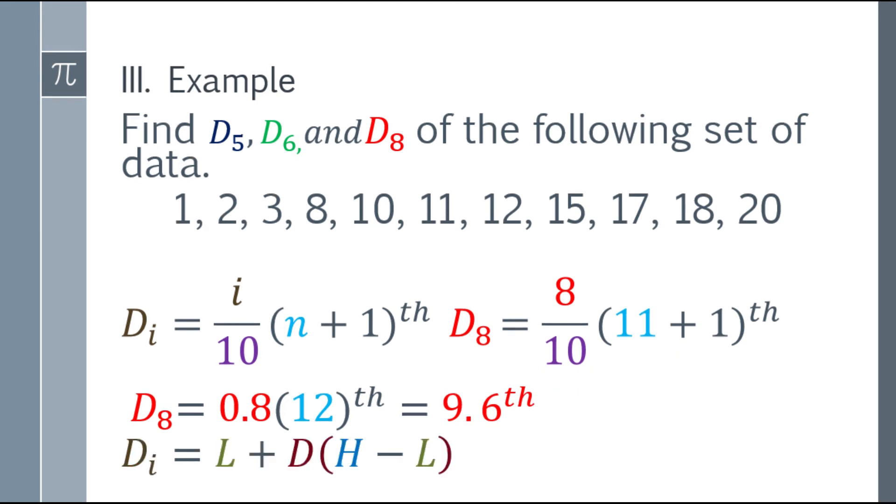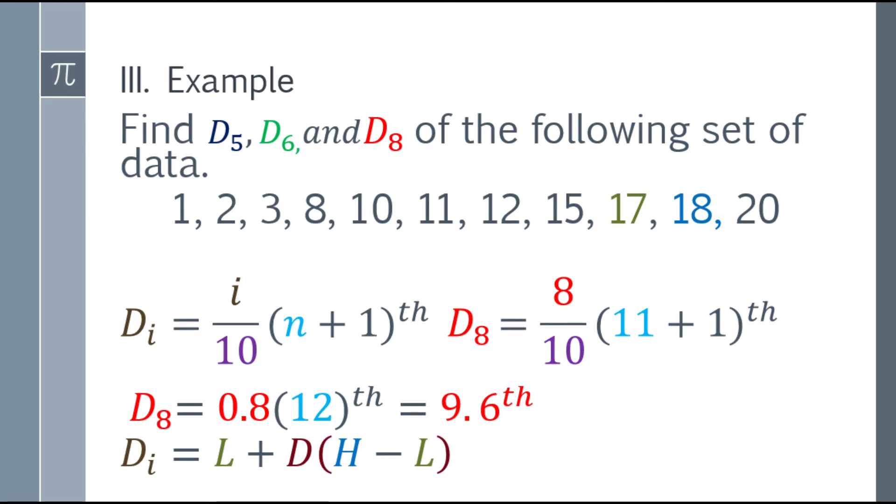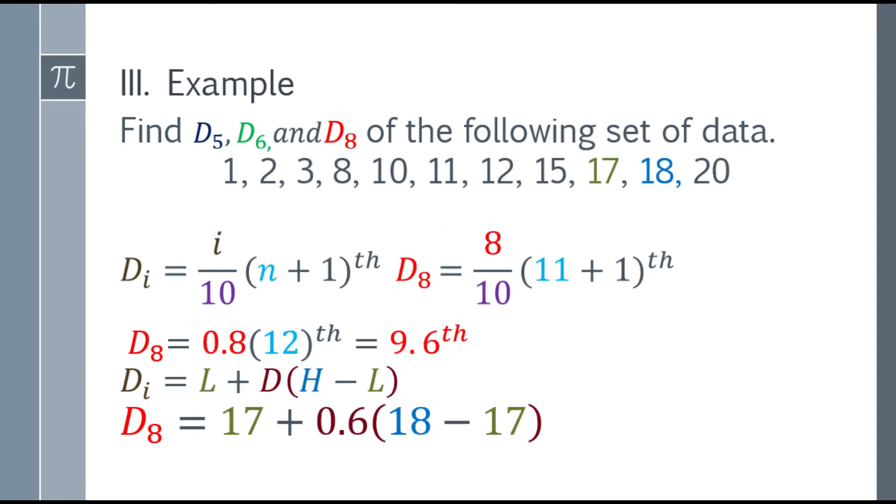Now, let's find the lower number and higher number. When you round down 9.6, that will be 9. And the higher number, to find the higher number, round up 9.6, that will be 10. So, find the 9th and 10th numbers. The 9th number is 17. And the 10th is 18. So, the lower number here is 17. And the higher number is 18.